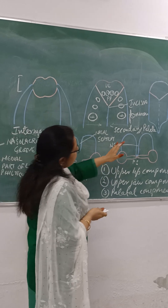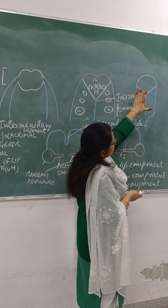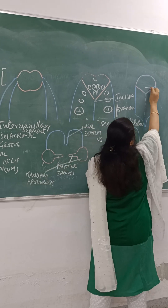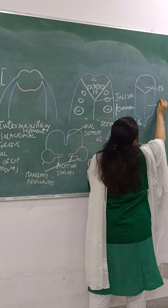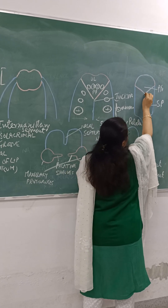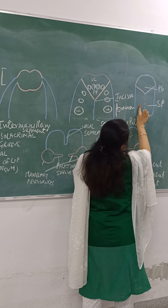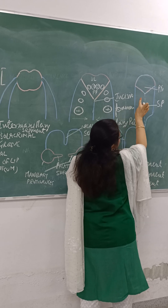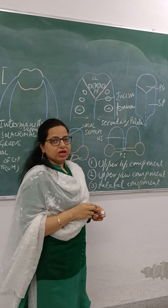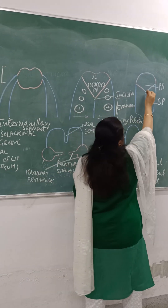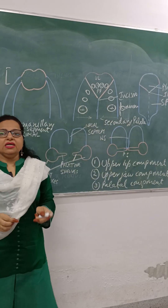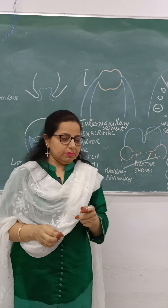So the palate as a whole develops from two components — the primary palate and the secondary palate — which fuse with each other. The secondary palate fuses with the primary palate as well as with itself, and that is how the whole palate is developed. The incisive foramen is the demarcating line between the primary and the secondary palate.